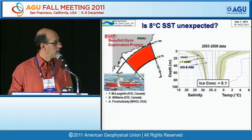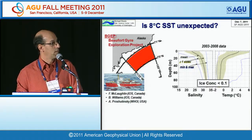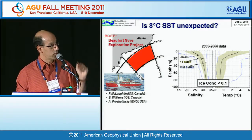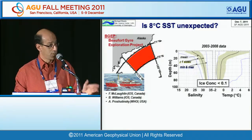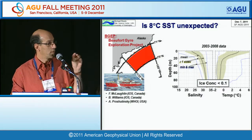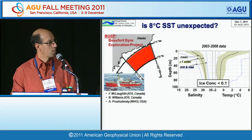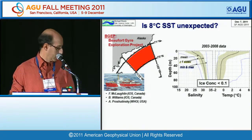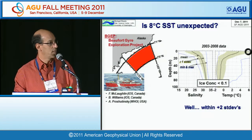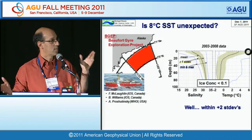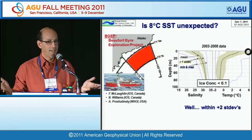Some buoys got up to 8 or even 10 degrees C SST — is that surprising? Looking at hydrographic data from the Beaufort Gyre Exploration Project, where an icebreaker collects data every year, in open water regions the mean surface temperature is about 3 degrees C, and plus one standard deviation is maybe 6 degrees C. So 8 degrees C is within plus 2 standard deviations — it's on the high end of normal.